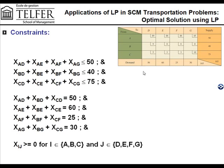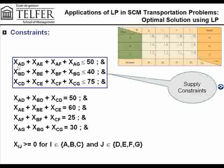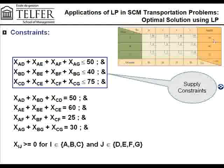Looking at the constraints, the first set are your supply constraints. Everything coming out of A — so X_AD plus X_AE plus X_AF plus X_AG, that's everything going from A to D, A to E, A to F, and A to G — the sum of that should be less than or equal to 50, which is the maximum possible supply.